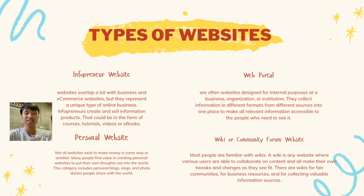The next one is an Infopreneur Website. These websites overlap a bit with business and e-commerce websites, but represent a unique type of online business. Infopreneurs create and sell information products that could be in the form of courses, tutorials, videos, or e-books. Examples are SmartPassiveIncome.com and MarieForleo.com.